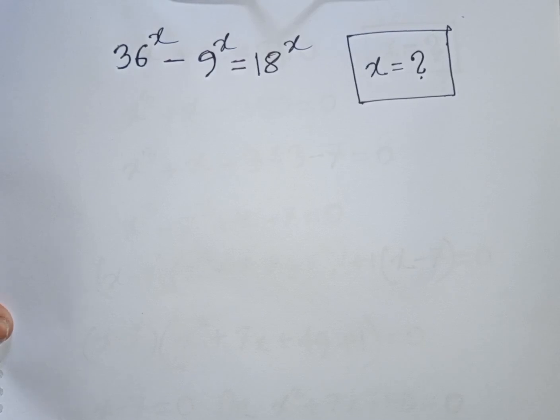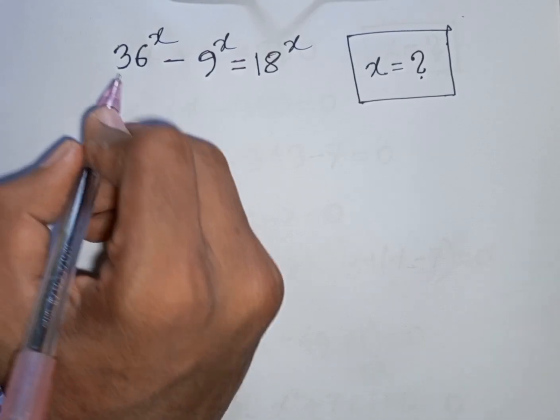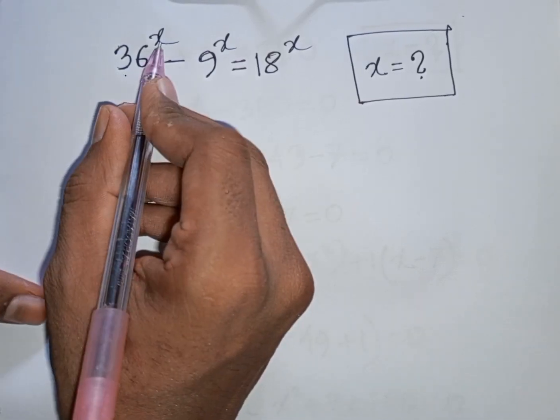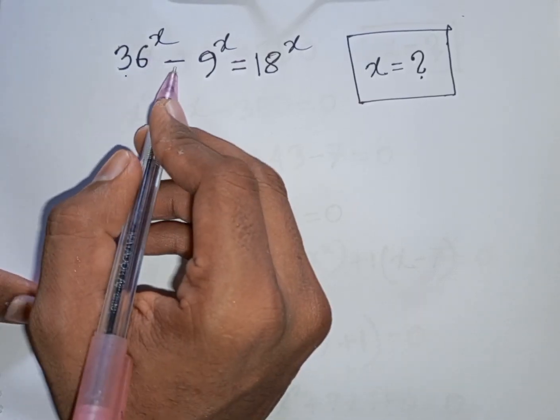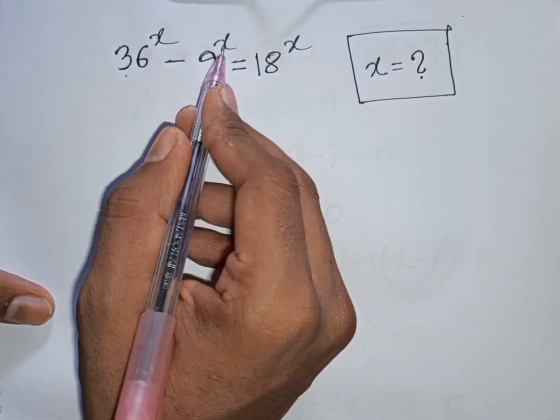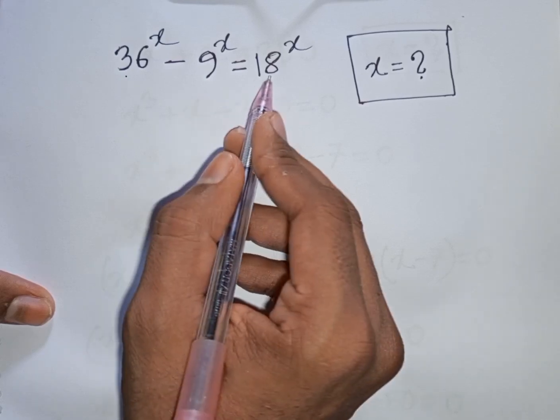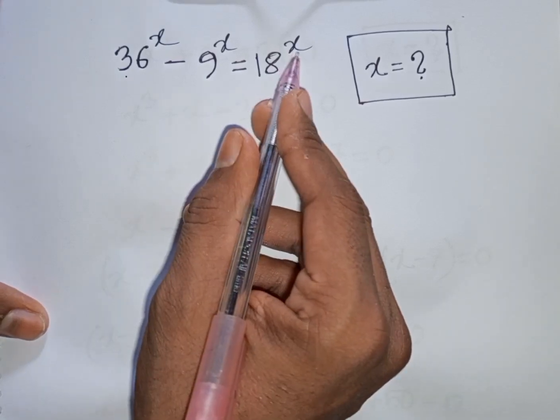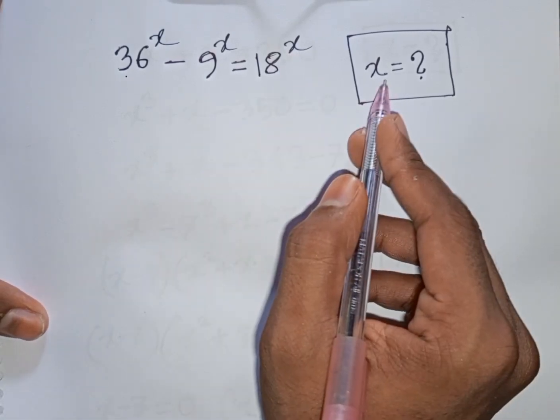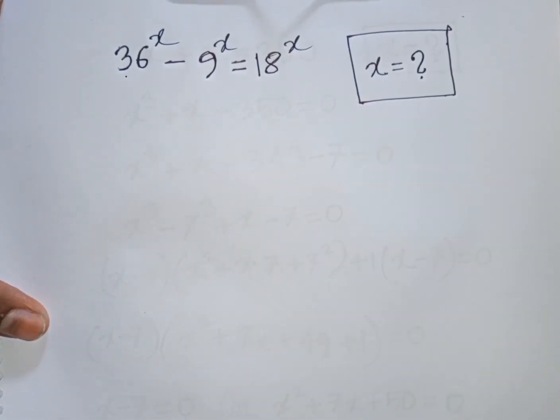How to solve 36 power x minus 9 power x is equal to 18 power x. Find the value of x.